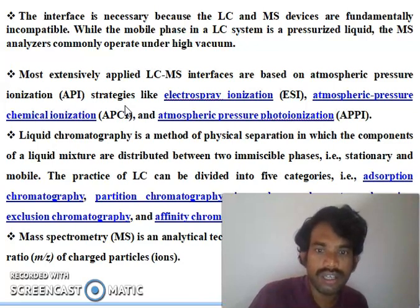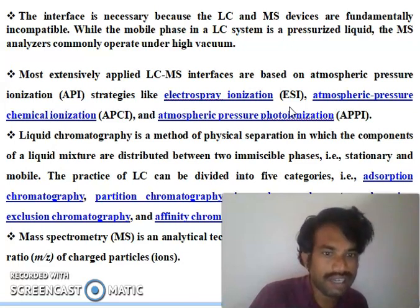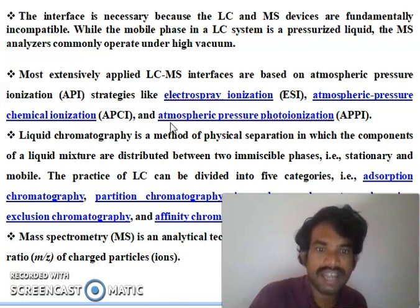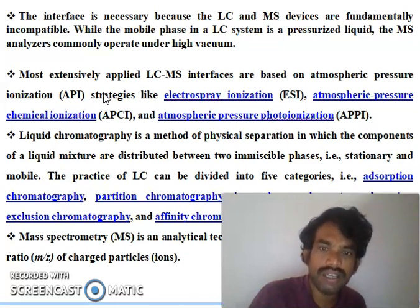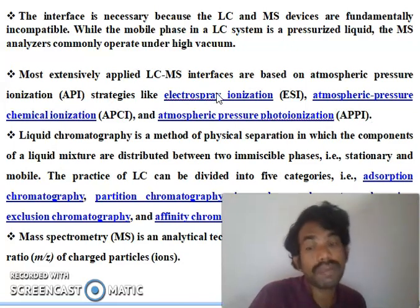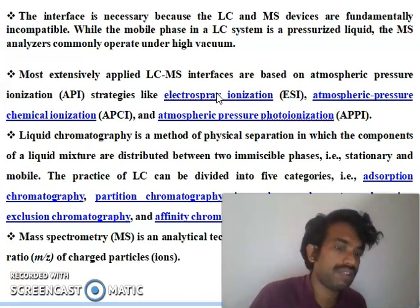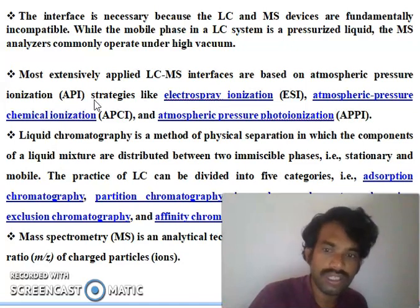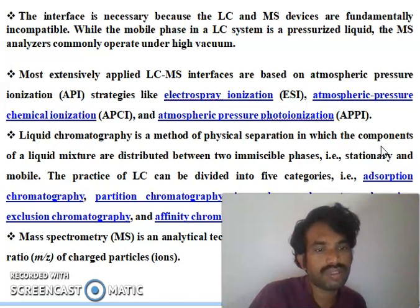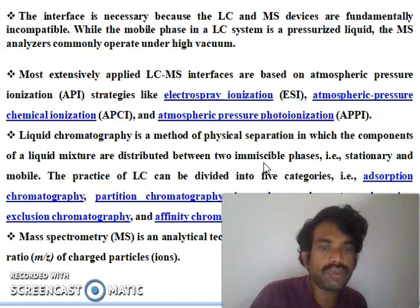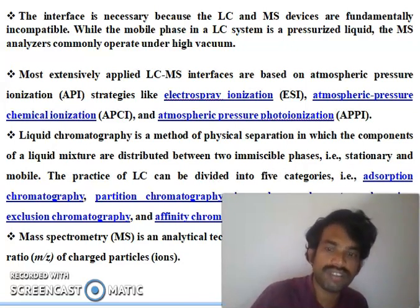The most extensively applied LC-MS interfaces are based on atmospheric pressure ionization. The strategies include electrospray ionization, atmospheric pressure chemical ionization, and atmospheric pressure photoionization. These are the mass spectroscopy techniques — depending on your compound and the mass of your target molecules. Liquid chromatography is a method of physical separation based on the components of the liquid mixtures distributed between two immiscible phases — stationary and mobile phase.